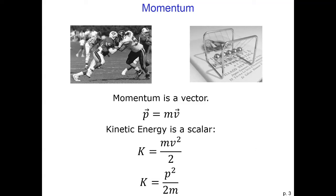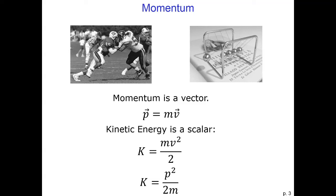Momentum is a vector, which should be clear because velocity is a vector, and mass is a scalar, so the product of mass and velocity must also be a vector. This means that momentum has both a magnitude and a direction. The direction of the momentum is exactly the same as the direction of the velocity. The magnitude of the momentum depends both on the velocity and the mass.